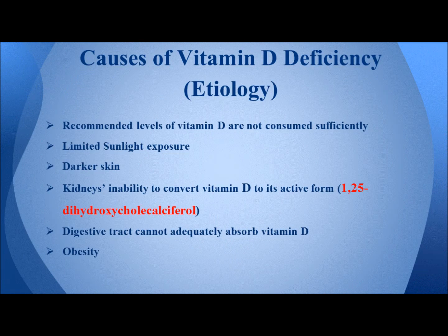Sources of vitamin D deficiency — etiology. Recommended levels of vitamin D are not consumed sufficiently. This is likely if you follow a strict vegetarian diet, because most of the natural sources are animal-based. Limited sunlight exposure usually happens to people who are homebound; in Muslim countries, women wear hijab, and in Gulf countries, men wear thob and shemakh.